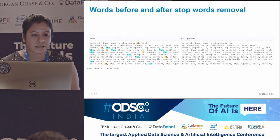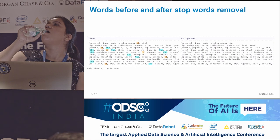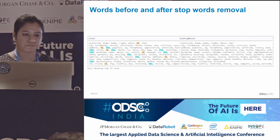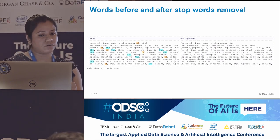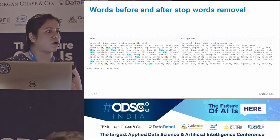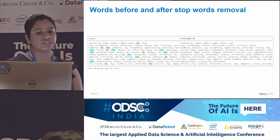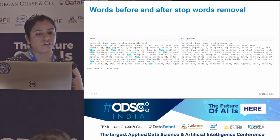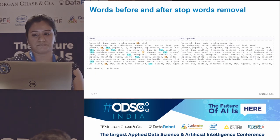This is an example of the data showing how it looked before and after stop words removal. You can see the words highlighted — 'of' and 'though' — are gone from the right-hand side column.